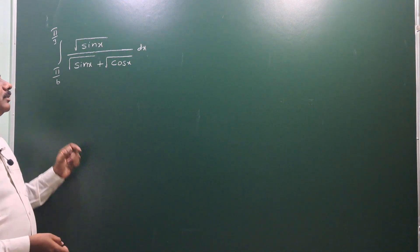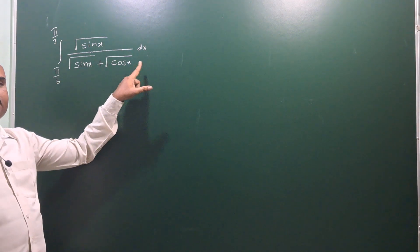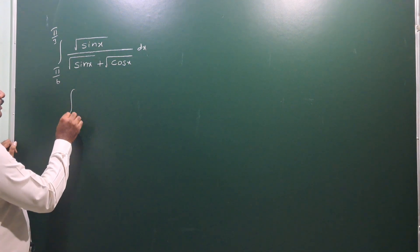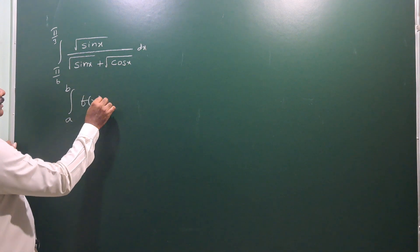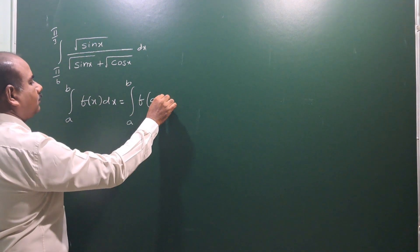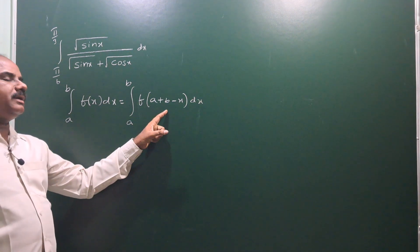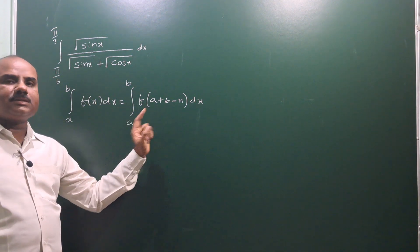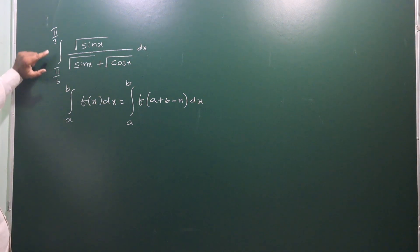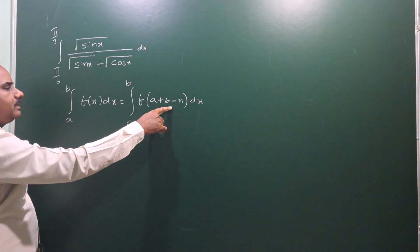Hello students, next problem from definite integration: integral from π/6 to π/3 of √(sin x) / (√(sin x) + √(cos x)) dx. We will solve this problem using the property: integral a to b of f(x) dx = integral a to b of f(a + b - x) dx.